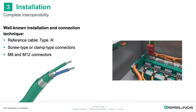The reference cable is type A. This cable is well-known in the industry, and there are literally millions of kilometers installed today. This means that the cable can remain in place during migration and upgrades, saving considerable cost. Instrument professionals value the robust instrument connection via screw type or spring clamp terminals. M8 and M12 connections are also possible.